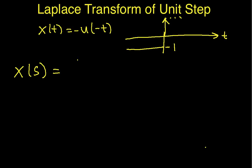We have x of s is the integral from minus infinity to infinity of x of t e to the minus s t dt. This is the definition of the bilateral Laplace transform. Now we can look at x of t. x of t is zero for values of t greater than zero, so that means that this upper limit of integration here will actually be zero.